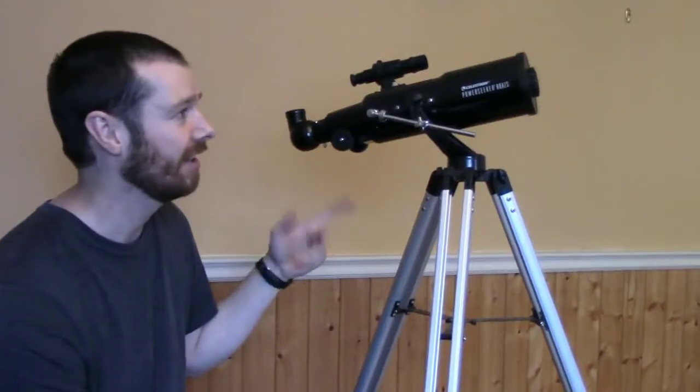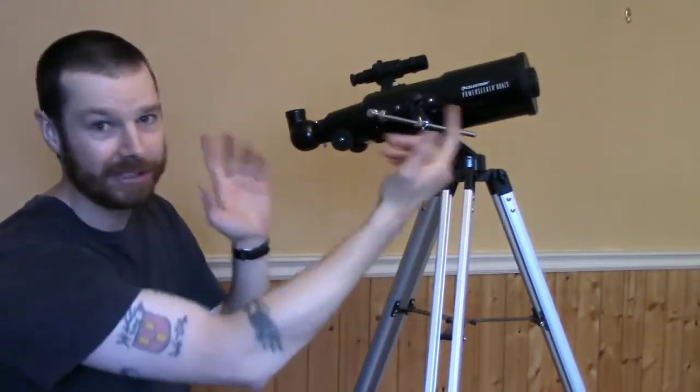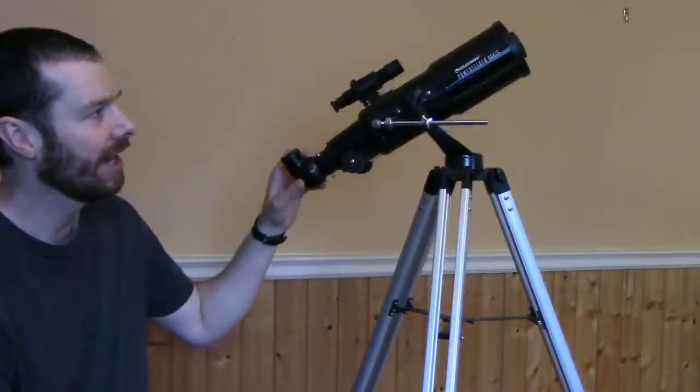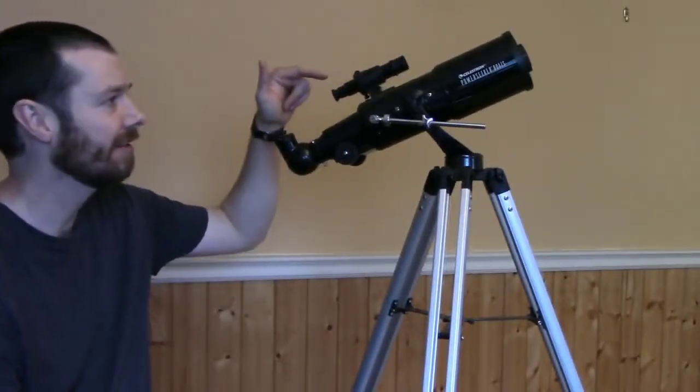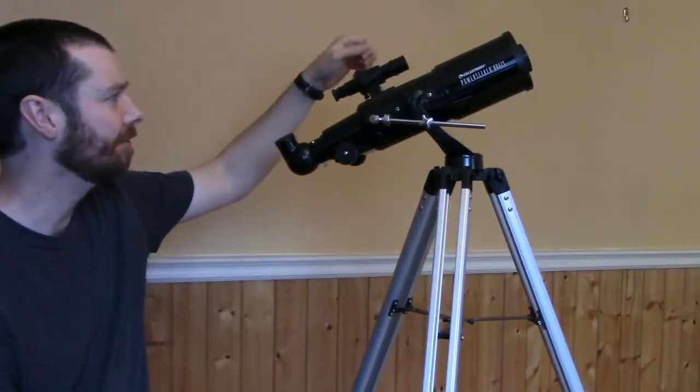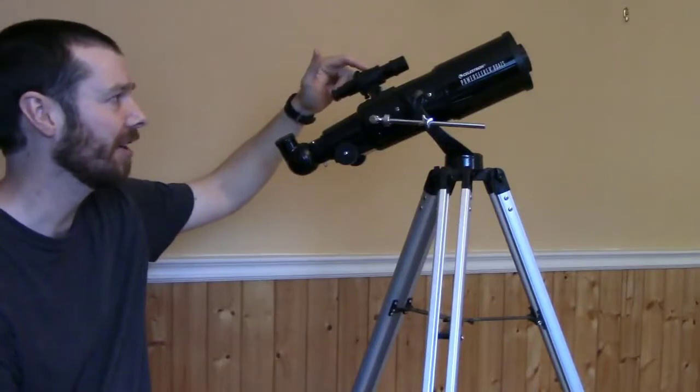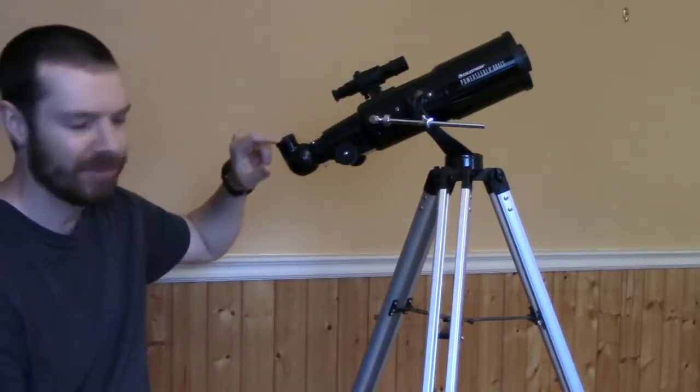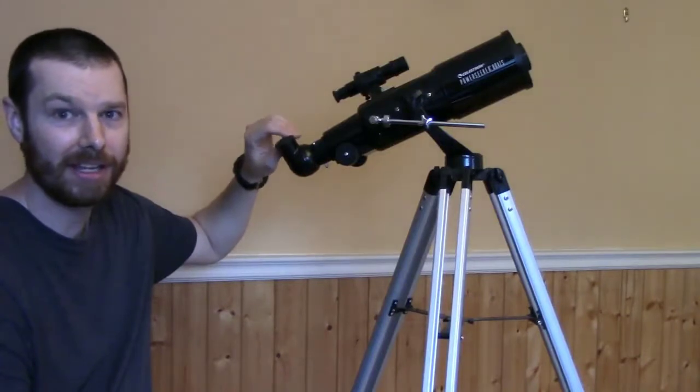The S stands for short, so it's a shorter tube. It has a 400 millimeter focal length and a 5 by 24 finder scope right here. It comes with two eyepieces, a 20 millimeter and a 4 millimeter.